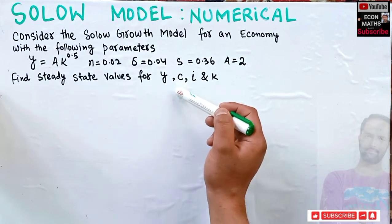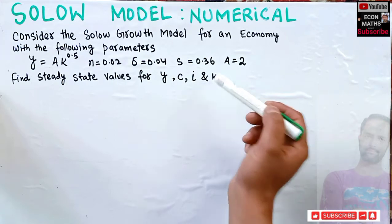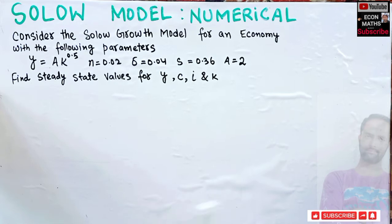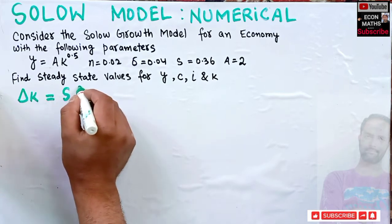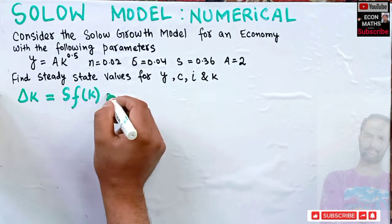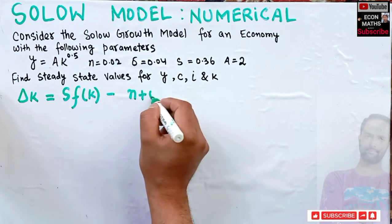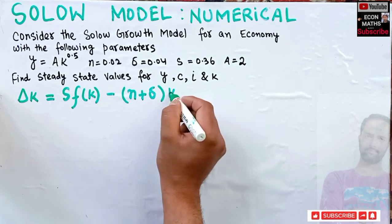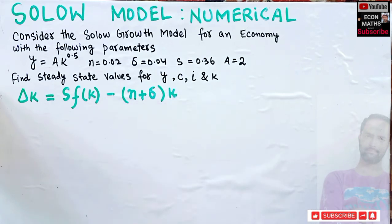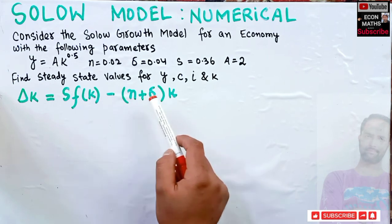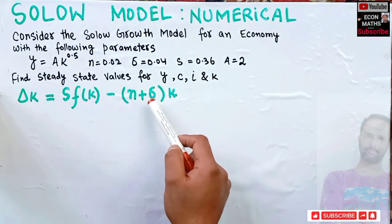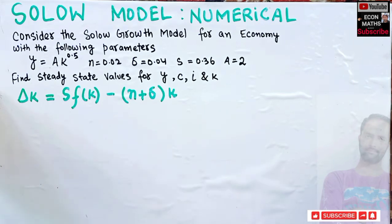We have to find the steady state values for output per worker, consumption per worker, investment per worker, and capital per worker. To solve this, we should know the fundamental Solow growth equation: Δk = s·f(k) − (n + δ)·k. This denotes our change in capital per worker, s is the savings rate, f(k) is the production function, and (n + δ)·k represents population growth and depreciation.